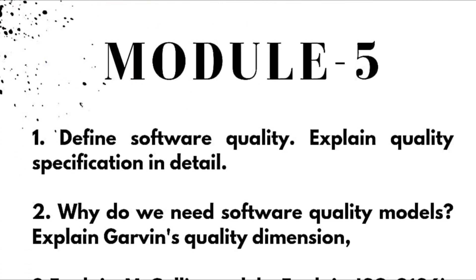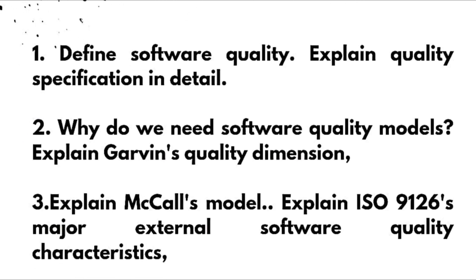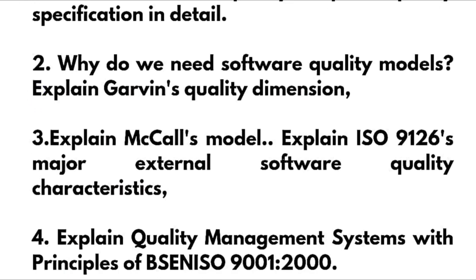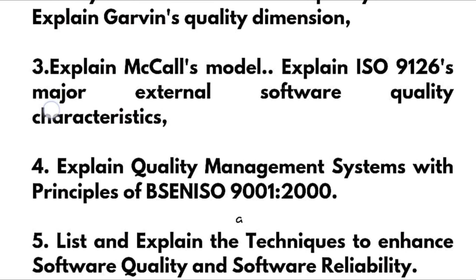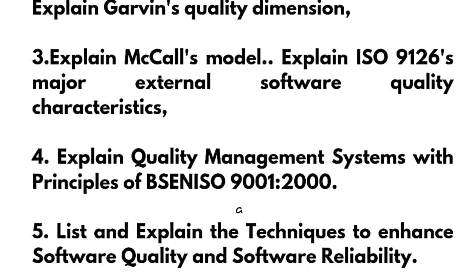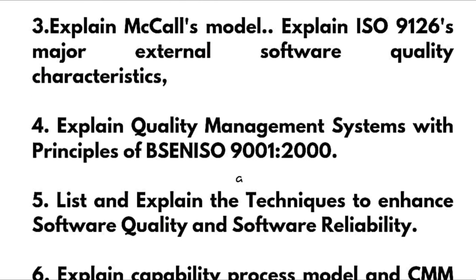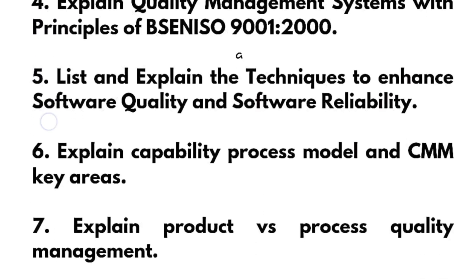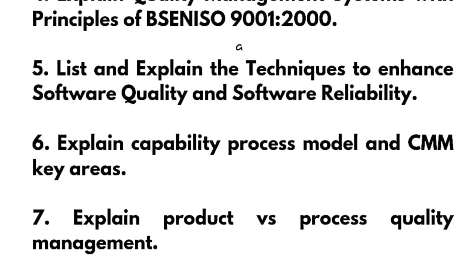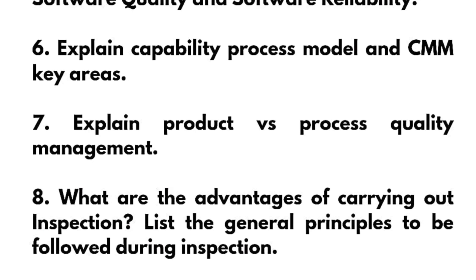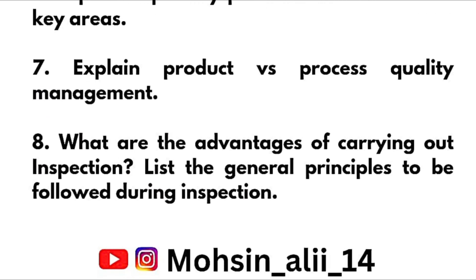Now the last module, Module 5. Super important questions: define software quality; explain quality specification in detail; why do we need software quality models; explain Garvin's quality dimensions; explain McCall's model — super important; explain ISO 9126 major external software quality characteristics; explain quality management systems with principles of BSE and ISO; list and explain techniques to enhance software quality and software reliability; explain the capability maturity model (CMM) and its key process areas; explain product versus process quality management; what are the advantages of carrying out inspection; list the general principles to be followed during inspection.